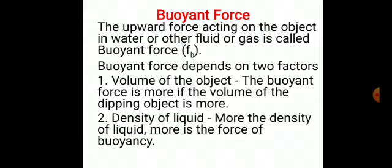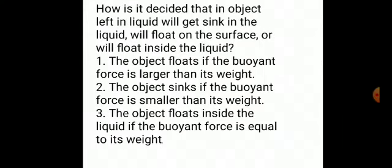It becomes easier to swim in sea water than in fresh water. This is because the density of sea water is higher than the density of fresh water due to salts dissolved in sea water. How is it decided whether an object left in liquid will sink, float on the surface, or float inside the liquid? The object floats if the buoyant force is larger than its weight. The object sinks if the buoyant force is smaller than its weight. The object floats inside the liquid if the buoyant force is equal to its weight.